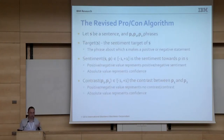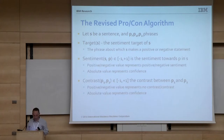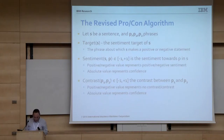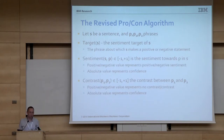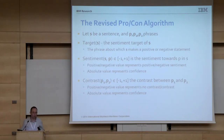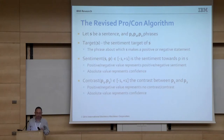Let's fix our algorithm, but first a few definitions. S is a sentence; P1 and P2 are phrases. The sentiment target of a sentence is a phrase in the sentence about which the sentence makes a positive or negative statement. The sentiment of a phrase in a sentence is a number between minus one and one, where a negative value means negative sentiment and a positive value means positive sentiment; the absolute value represents the confidence of our prediction. The contrast between two phrases is also a number between minus one and one: a negative number means there is contrast, a positive number means there is no contrast, and the absolute value represents confidence.